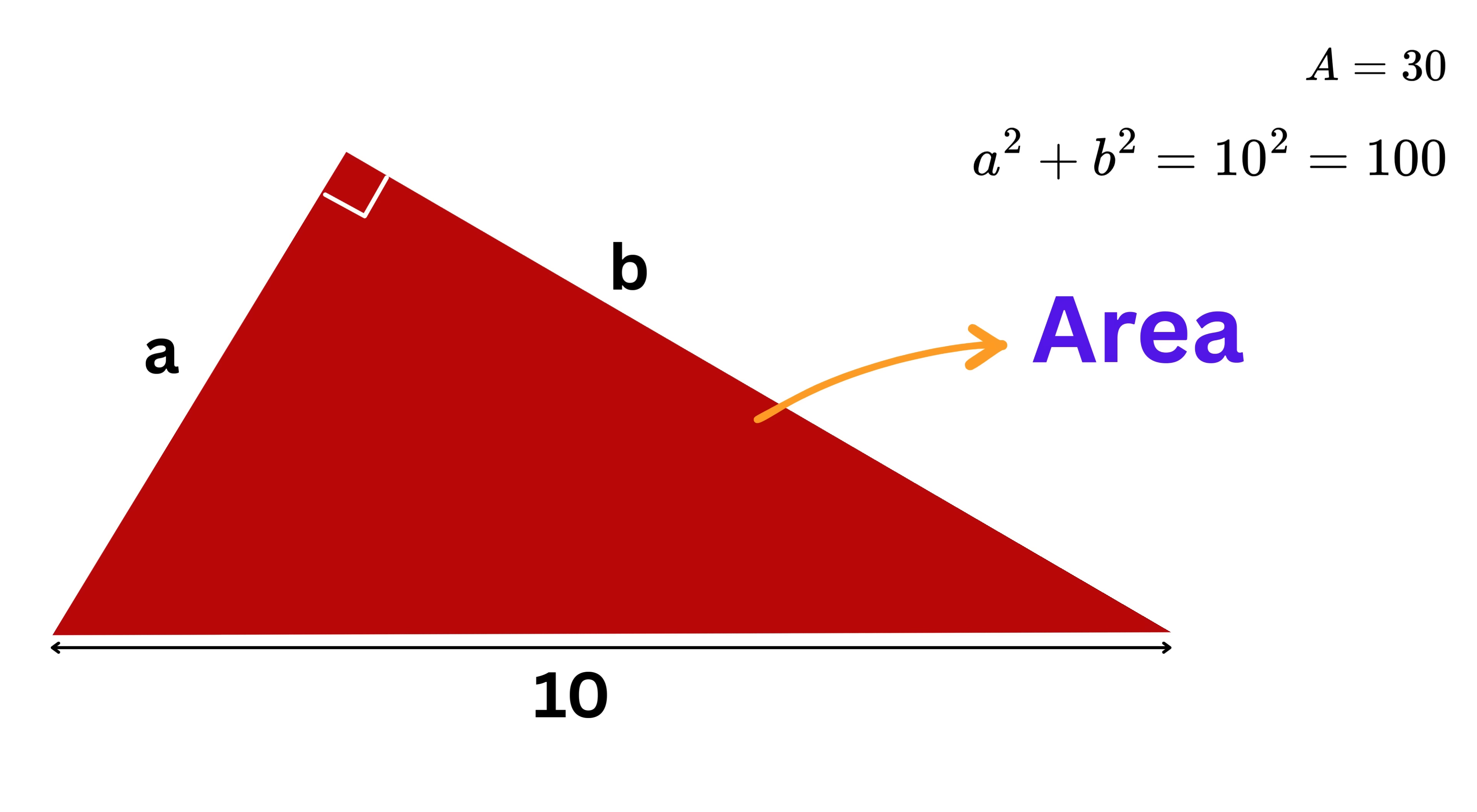Also, what will be the area of this triangle in terms of A and B? Here this A acts as base and B as height, so the area equals A times B over 2. But we calculated the area of this triangle as 30 square units, so equating both of them gives AB over 2 equals 30, or AB equals 60.